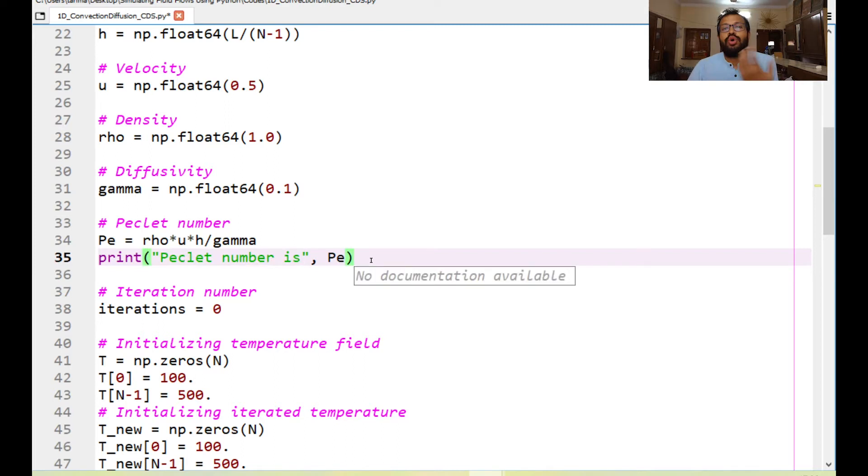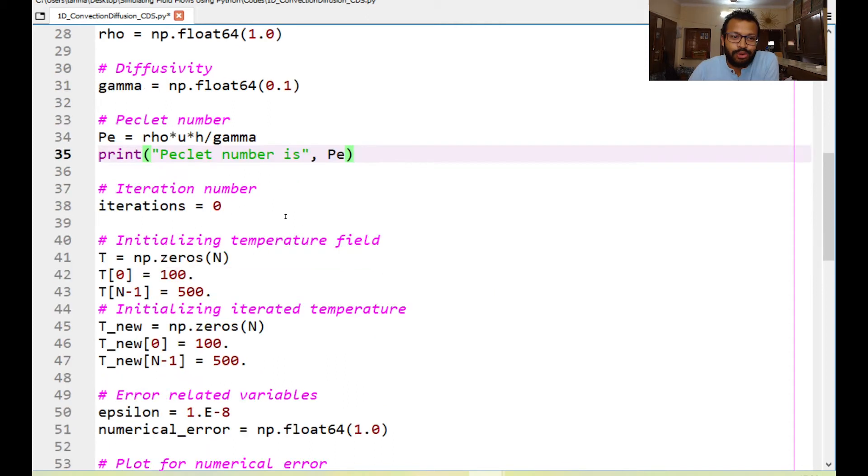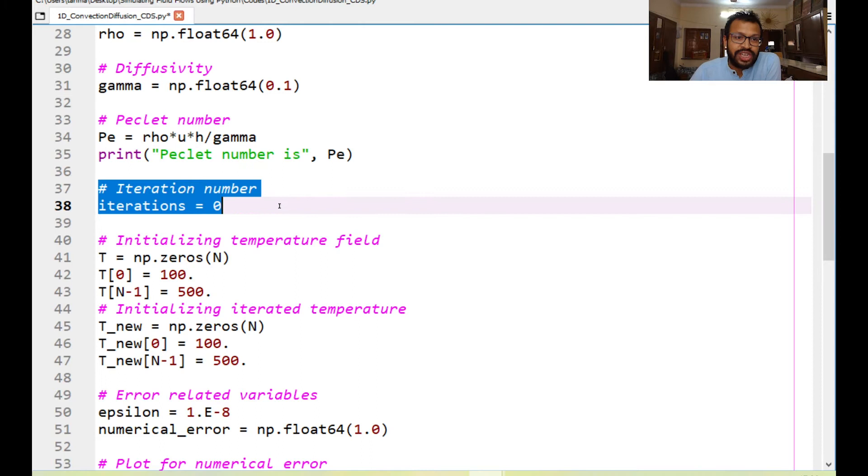So I'm doing this just to ensure that the Peclet number is within the central differencing acceptable range that is the magnitude is less than 2 and we would see that if the magnitude is larger than 2 the code would just go crazy and you would get a very crazy kind of solution. After that we define the iteration number or we initialize the iteration number as 0.